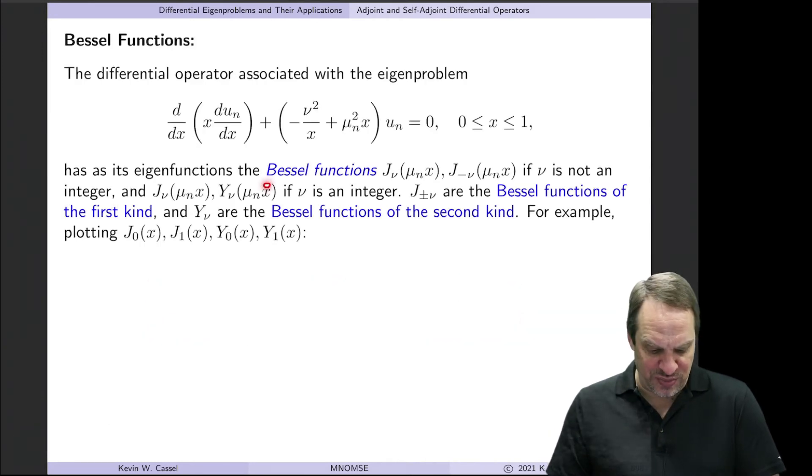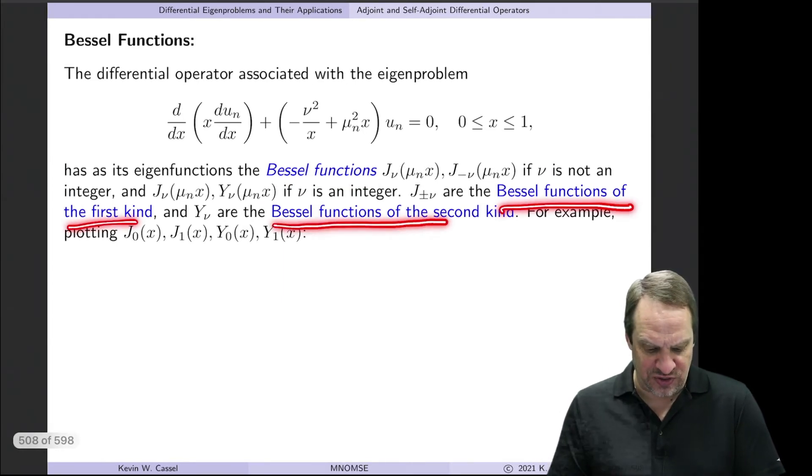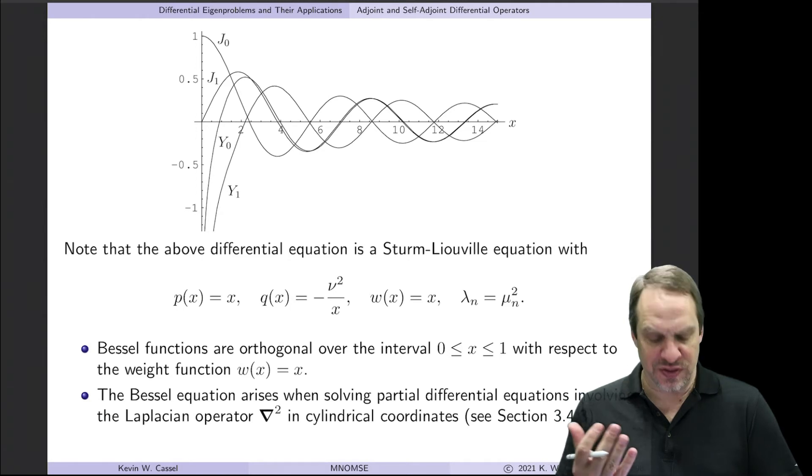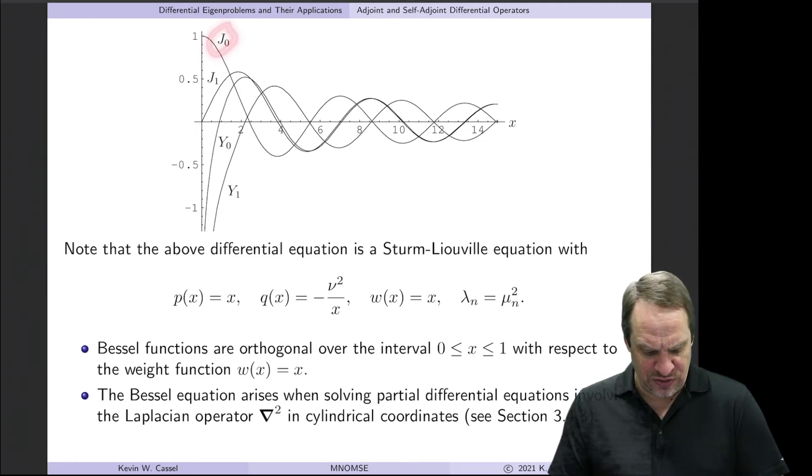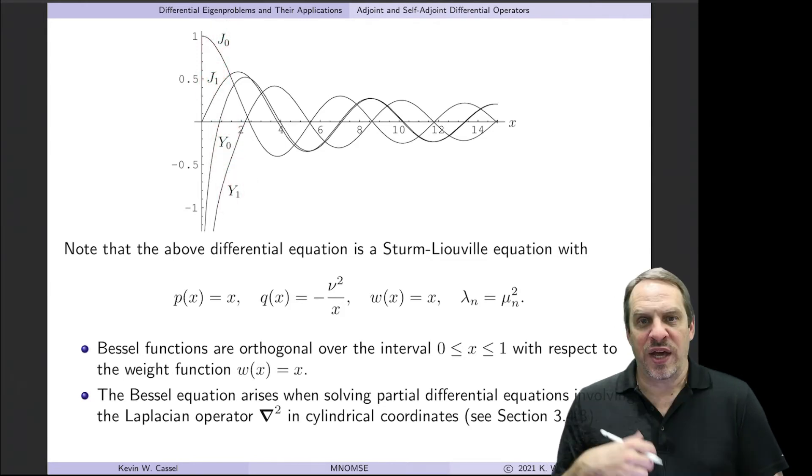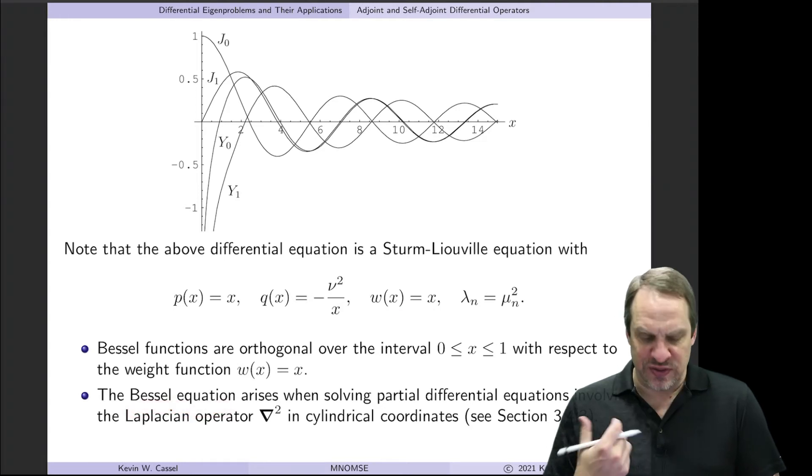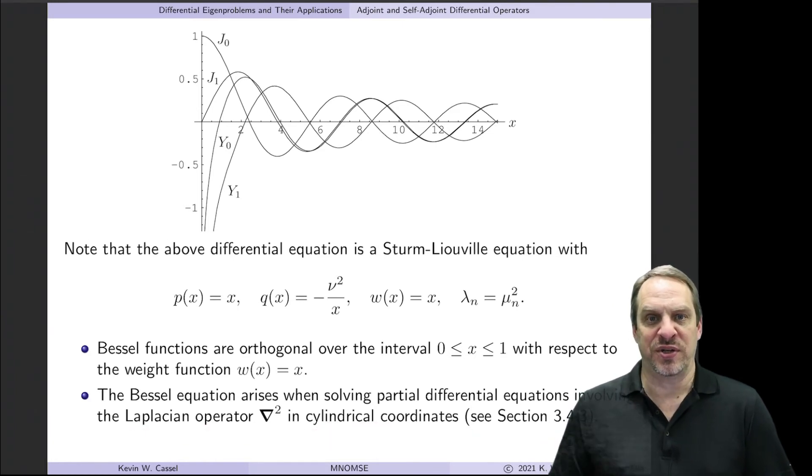So the corresponding eigenfunctions are Bessel functions. There's Bessel functions of various kinds. There's Bessel functions of the first kind, Bessel functions of the second kind. They go by j's and y's, and here's an example of how four of them look. There's an infinity of these, and this is how four of them look. So here's j0, j1, y0, and y1. So you can see they have this oscillatory behavior. And the key then is that these Bessel functions are orthogonal over this interval from zero to one with respect to the weight function, which is x, as you see here. Now this Bessel equation arises oftentimes when you're solving PDEs where you have a Laplacian, which is a del squared u, in cylindrical coordinates. It's often the case that you end up with a Bessel-type equation.